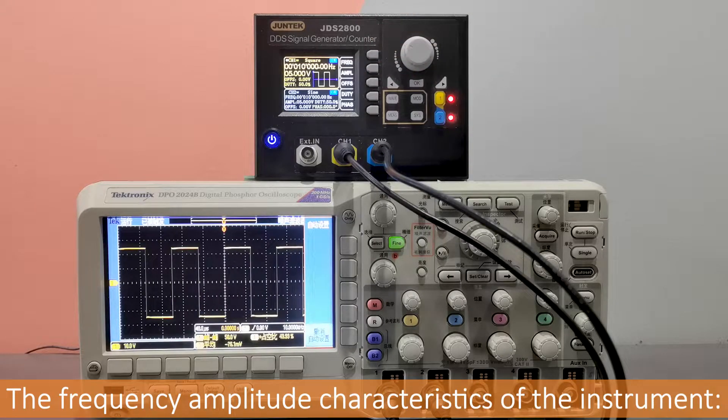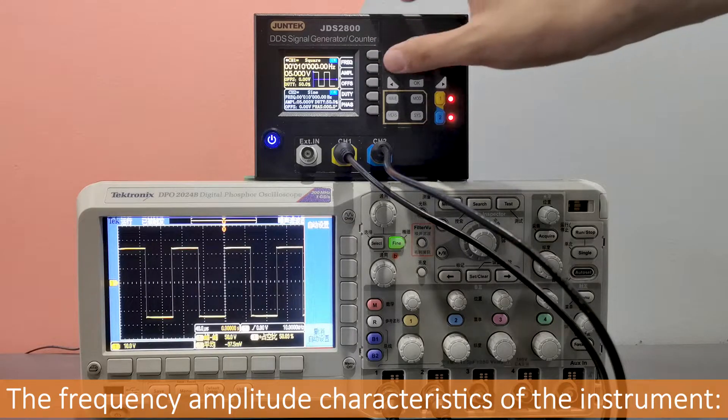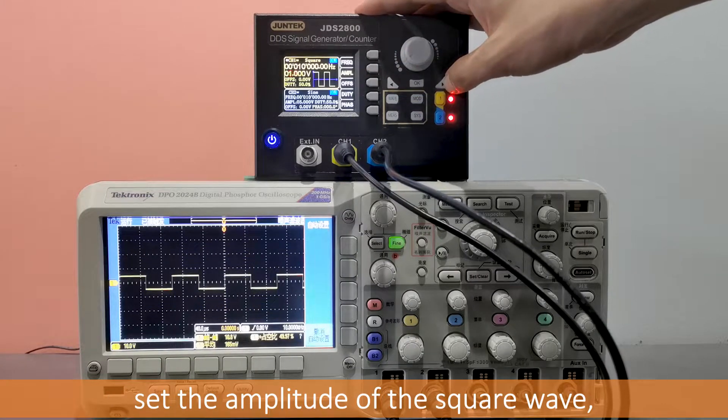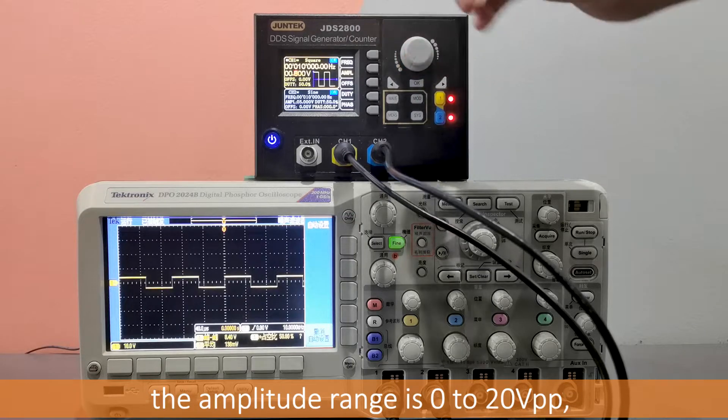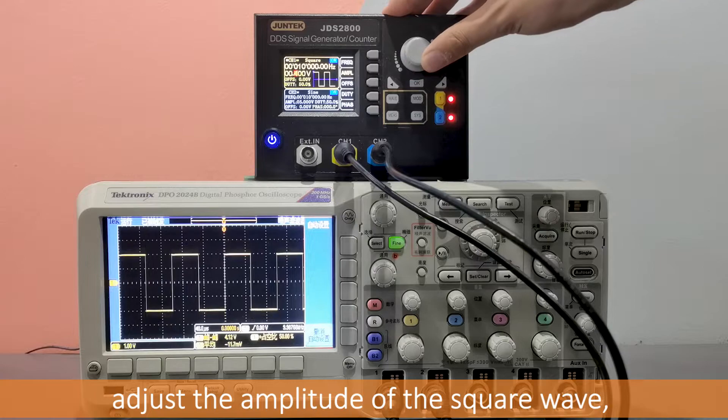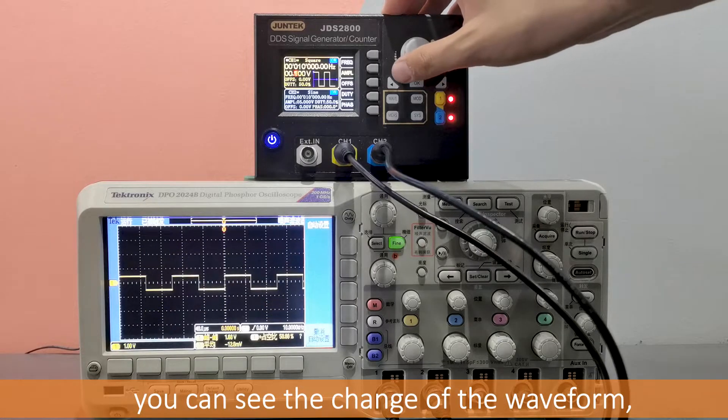The frequency amplitude characteristics of the instrument. First, switch the waveform to square wave, set the amplitude of the square wave. The amplitude range is 0 to 20 VPP. Adjust the amplitude of the square wave, you can see the change of the waveform.